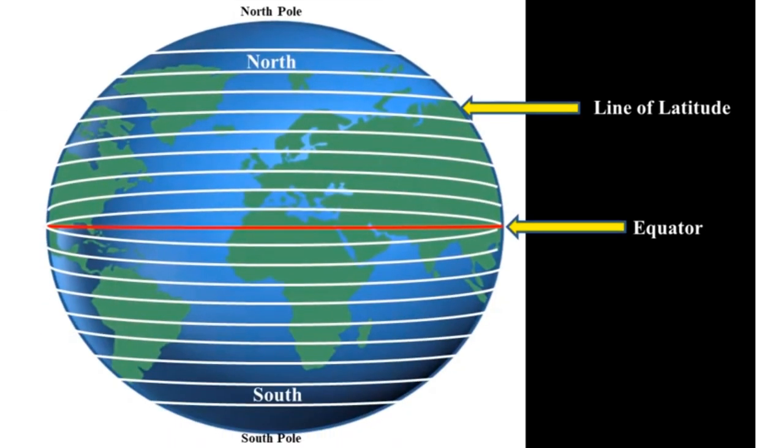Now let us study about some features of the globe. The red line which divides the earth into two equal parts is known as the equator. The equator divides the earth into two parts, that is the north and the south. The part of the earth above the equator is known as the northern hemisphere. And the part of the earth below the equator is the southern hemisphere.